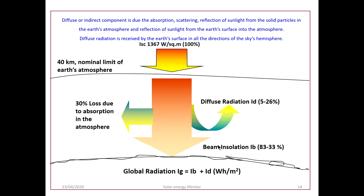The diffuse or indirect component is due to the absorption, scattering, and reflection of sunlight from solid particles in Earth's atmosphere and reflection from Earth's surface. We can read in our classrooms and drawing rooms where direct sunlight doesn't reach — we can do so with the help of diffuse light. That light which spreads into the shade or shadow is called diffuse radiation. Diffuse radiation is received by Earth's surface in all directions — it is omnidirectional.